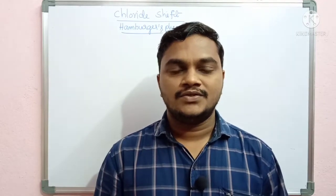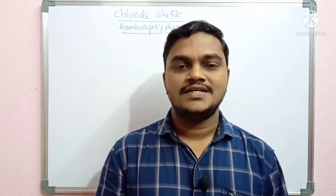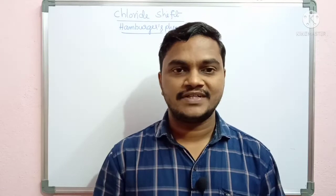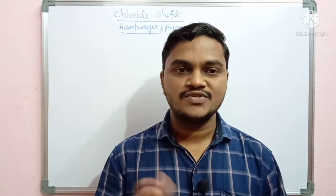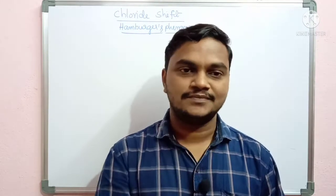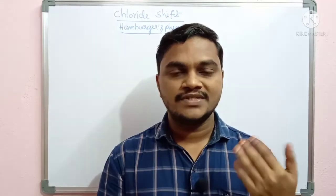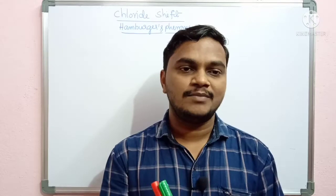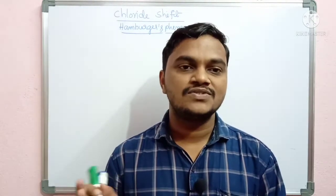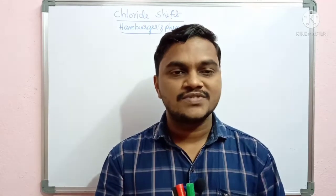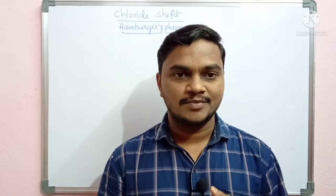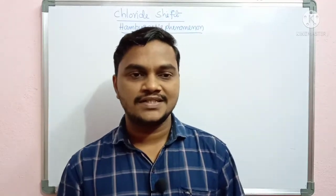Hi students, welcome to our channel. Today we will discuss chloride shift, also known as Hamburger's phenomenon. CO2 transport in the human respiratory system occurs by three methods: first, in the dissolved state — about 7%; second, as carbamino compounds — about 20 to 22%; and third, as bicarbonates — about 70%. Most of the CO2 is transported in the form of bicarbonates.